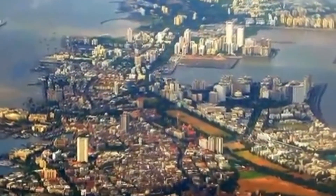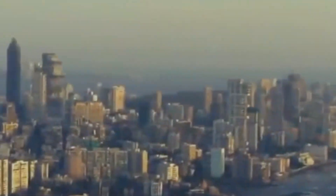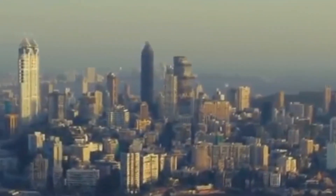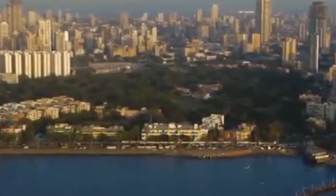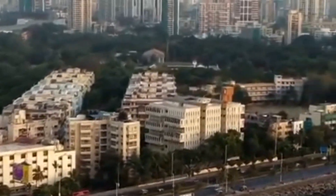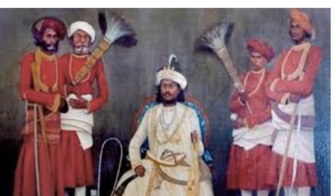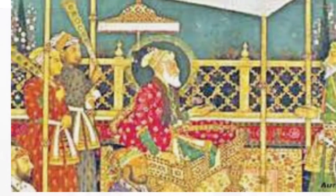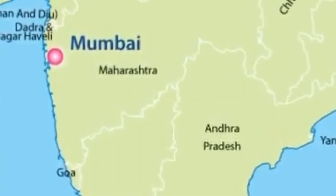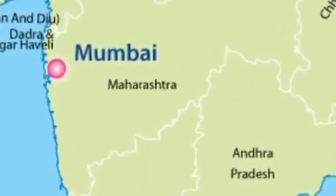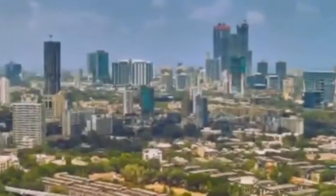History of Mumbai: For many centuries, the seven islands which formed modern Mumbai were occupied by the Koli fishing community. These islands were ruled at first by the Hindu rulers and later by Muslim rulers, followed by the Portuguese. Finally, the British took control of the island. British traders, Gujaratis, Parsis and Maharashtrians gradually built Mumbai into a busy port.